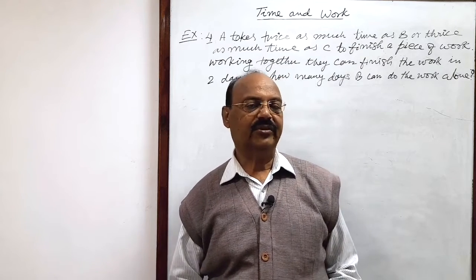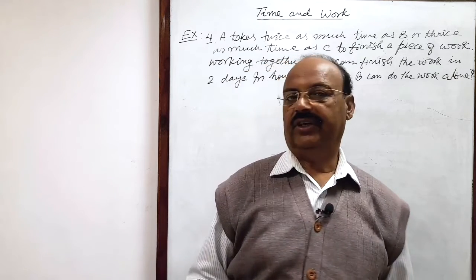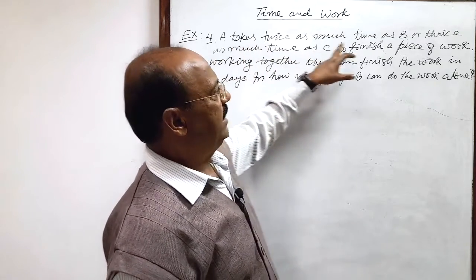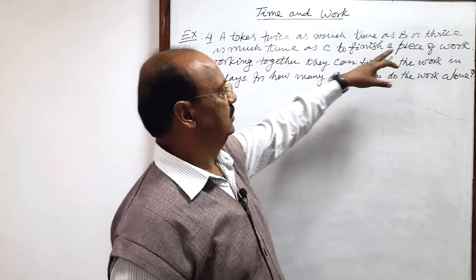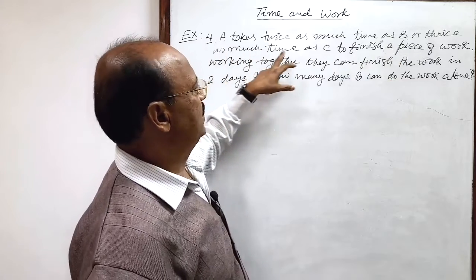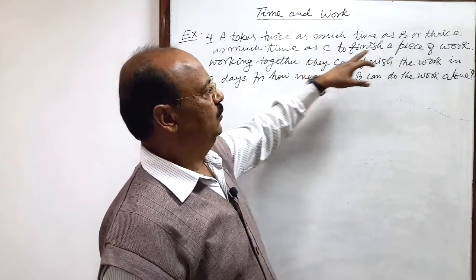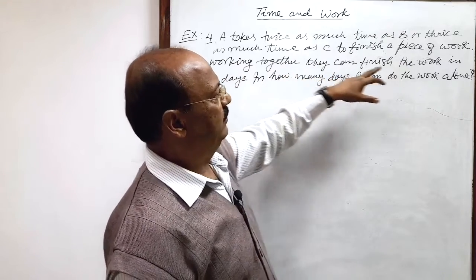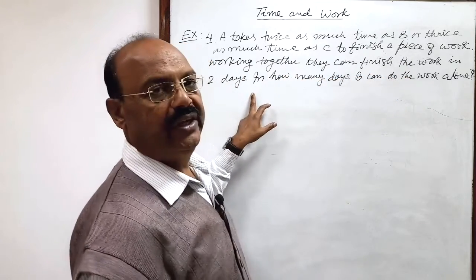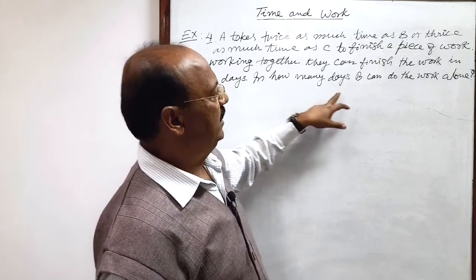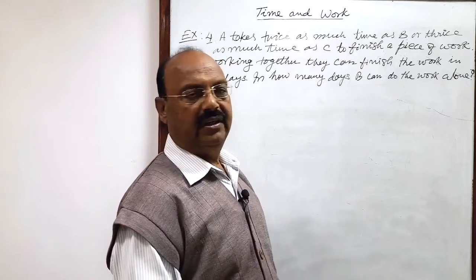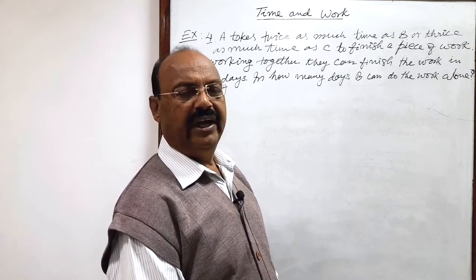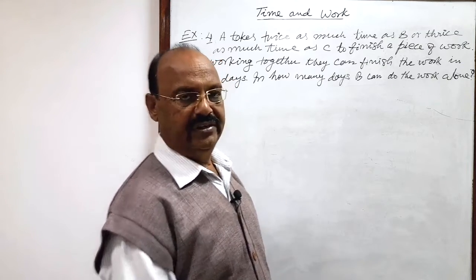Welcome students. Let us see a very important question from the chapter Time and Work. A takes twice as much time as B or thrice as much time as C to finish a piece of work. Working together, they can finish the work in two days. In how many days can B do the work alone? The question is a little bit tricky, but we can get the solution very easily.